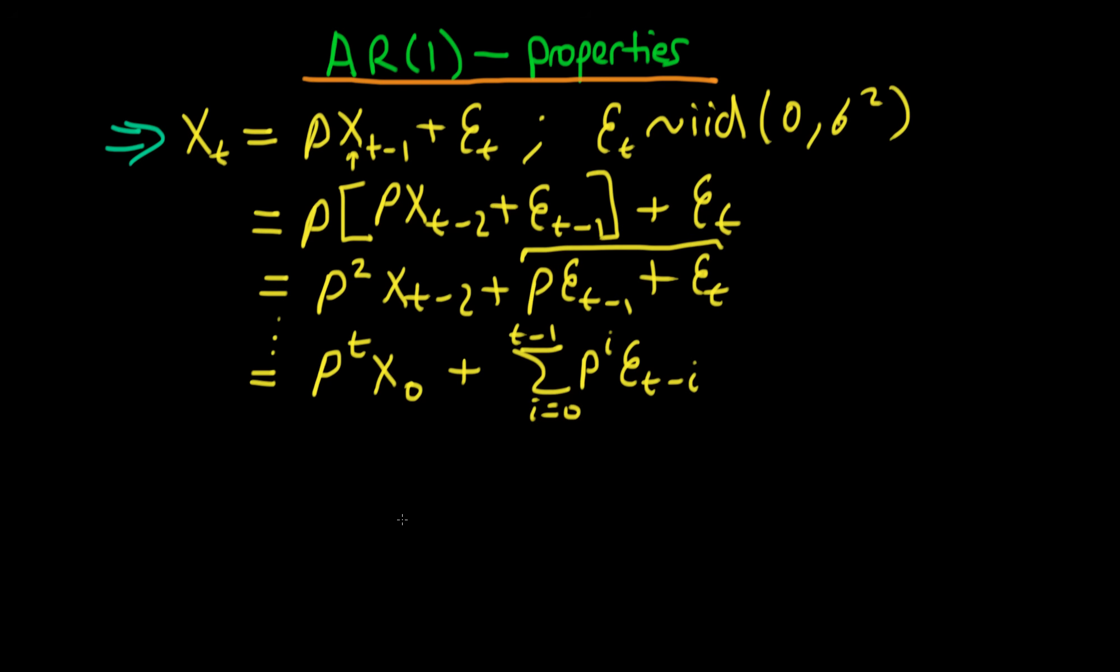Okay, so now we're in a position where we can start proving some of the conditions for an AR(1) process to be stationary. The first condition, remember, for a process to be stationary is that it has to have a constant mean. So we require that the expectation of Xt is a constant.